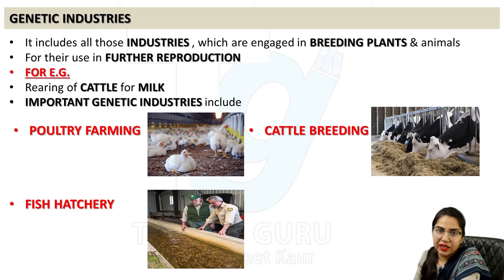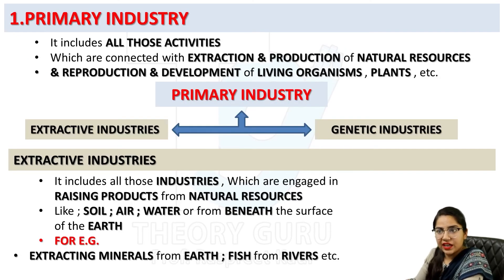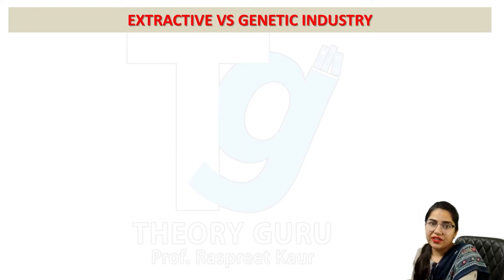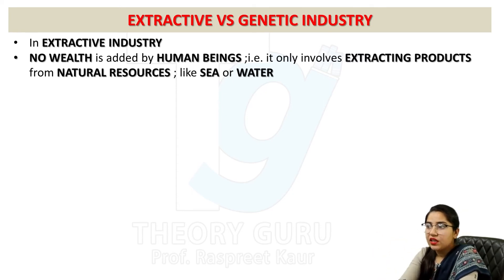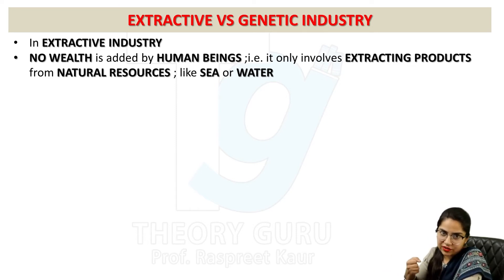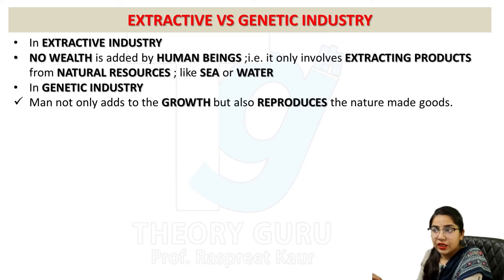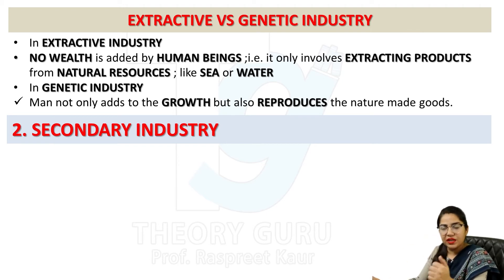So the difference between extractive and genetic industry is clear. In extractive industry, we are only extracting products from natural resources — from the sea, water, earth. In genetic industry, we talk about growth and reproduction — reproducing and growing animals or breeds under controlled conditions. What comes under natural resource extraction goes into extractive industry; what involves reproduction and growth of animals or plants goes into genetic industry. That was primary industry.